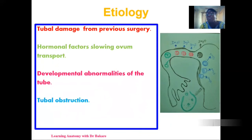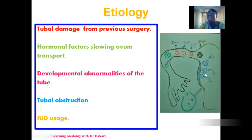We could also have tubal obstruction. Ectopic pregnancy can also result from an intra-uterine device used during contraception placed inside the uterus, as this can redirect the movement of the fertilized egg, causing it to implant in other regions apart from the uterus.